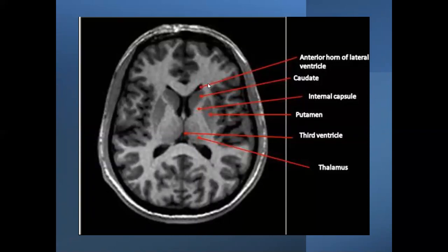On this MRI view you can see the lateral ventricle — the anterior or frontal horn — and the third ventricle. The hypointense area here is the caudate nucleus, and another nucleus visible is the thalamus. This is the internal capsule with its anterior limb, genu, and posterior limb. There are two structures here — the putamen and globus pallidus — which together constitute the lentiform nucleus. This is the external capsule lateral to the putamen, then the claustrum, and this is the insular cortex, the fifth lobe of the brain.